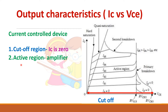The next region is the active region, where amplification takes place, and it is used for amplification purposes. However, if you calculate the power loss — voltage multiplied by current — in this active region it is very high. So normally in power electronics the active region is not used.